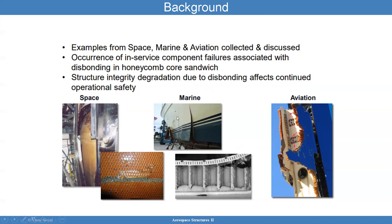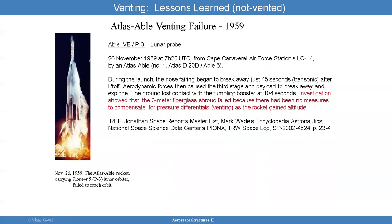Marine structures are also affected because moisture ingression can cause extra pressure that then causes failure events. As an example, we have the Atlas Abel venting failure in 1959. During launch, the nose fairing began breaking up. It happened because of aerodynamic forces, and the investigation found that there was no way to measure and compensate for the pressure differential across the face sheet. That caused a three-meter fiberglass shroud to fail because there was no way to mitigate this failure mode.